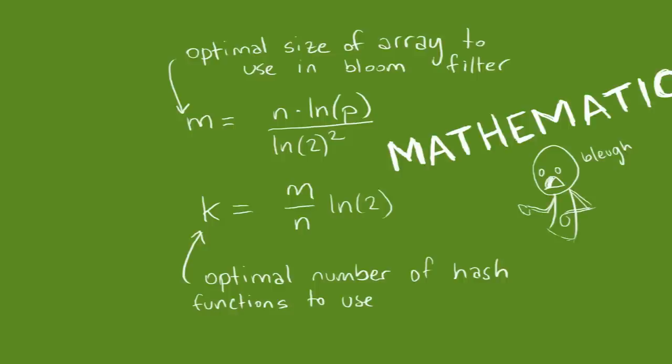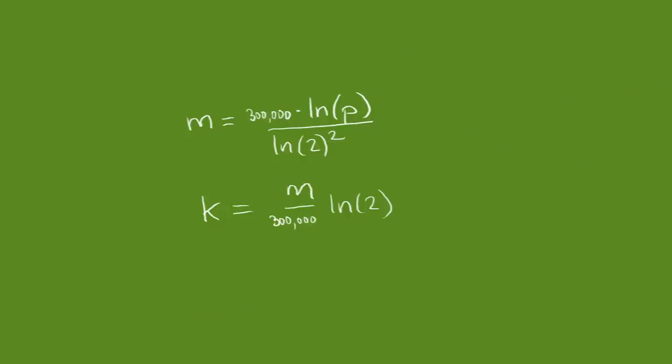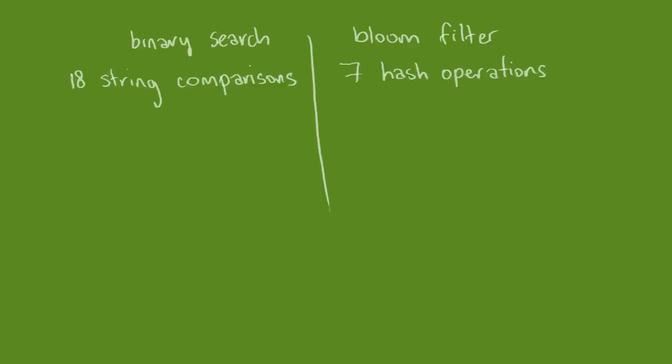If we hit up a bloom filter calculator and tell it we have 300,000 entries in our Oxford dictionary, and we're only willing to accept a false positive 1% of the time, it tells us that we need seven different hash functions and 351 kilobytes of space. That saved us a lot of computation time and space.